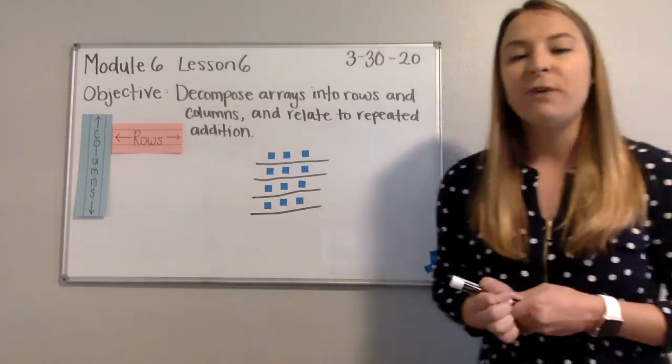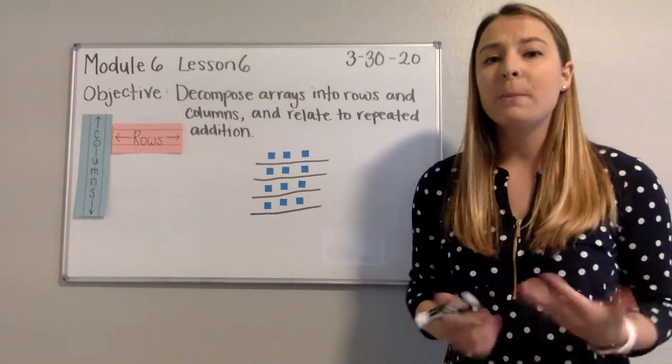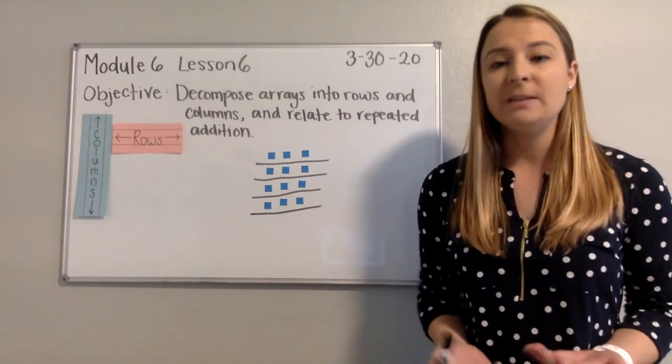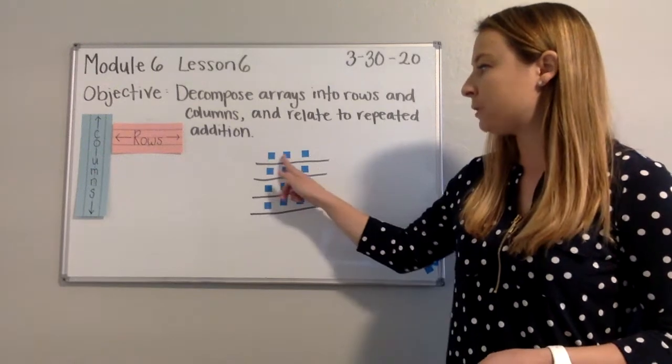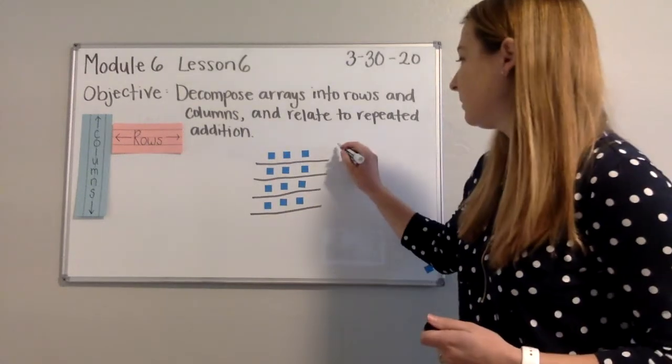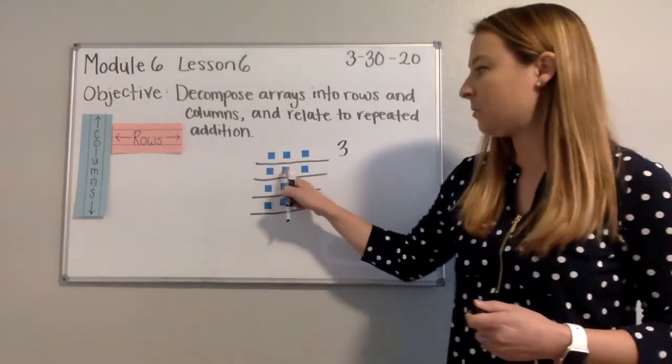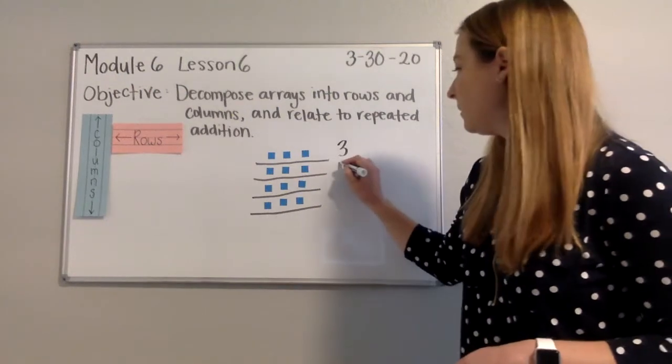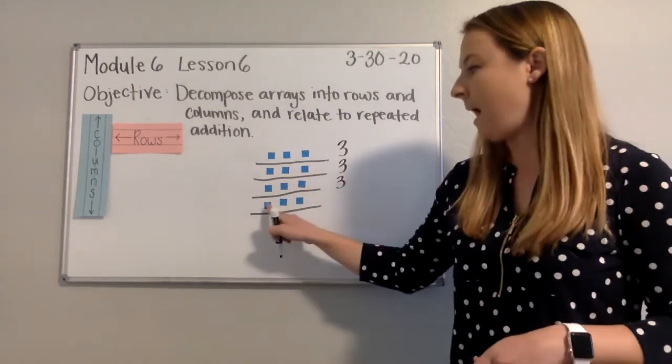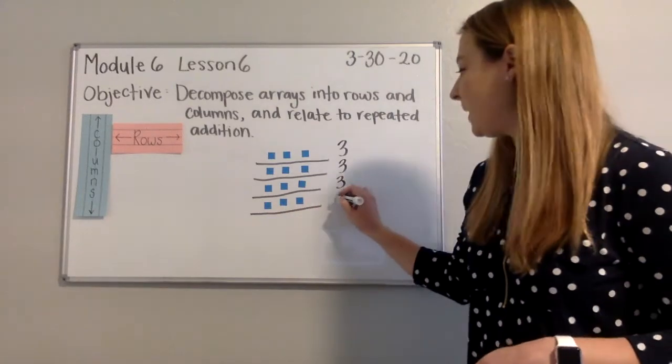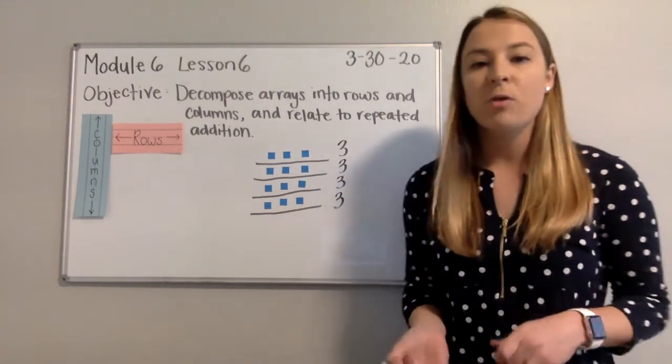Now if I wanted to find the total by working with a repeated addition equation, I would need to figure out how many counters are in each row. Looking at my first row, I have three. My second row also has three. My third row has three. And my fourth row has three. Each of the four rows has three.